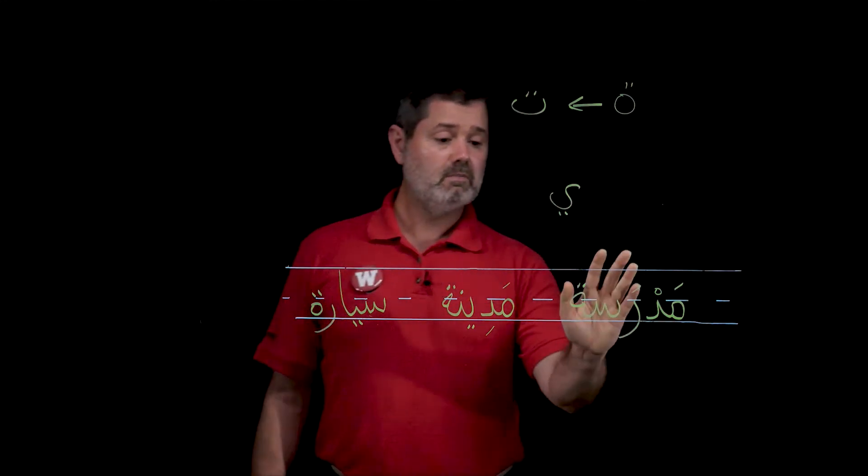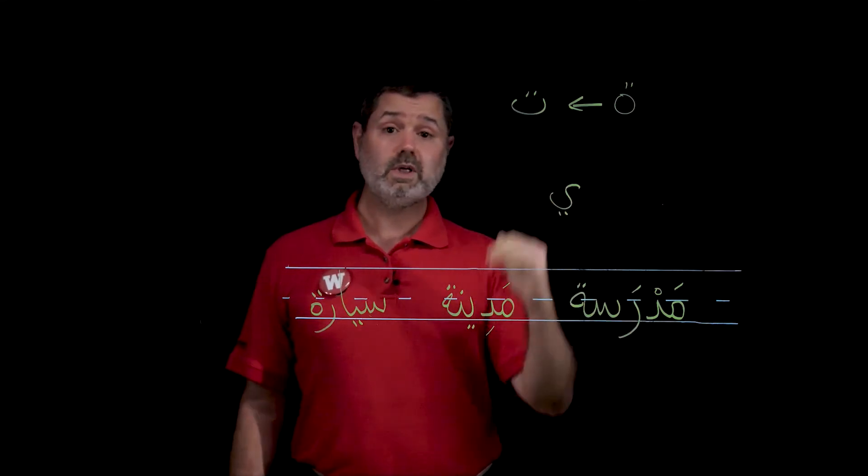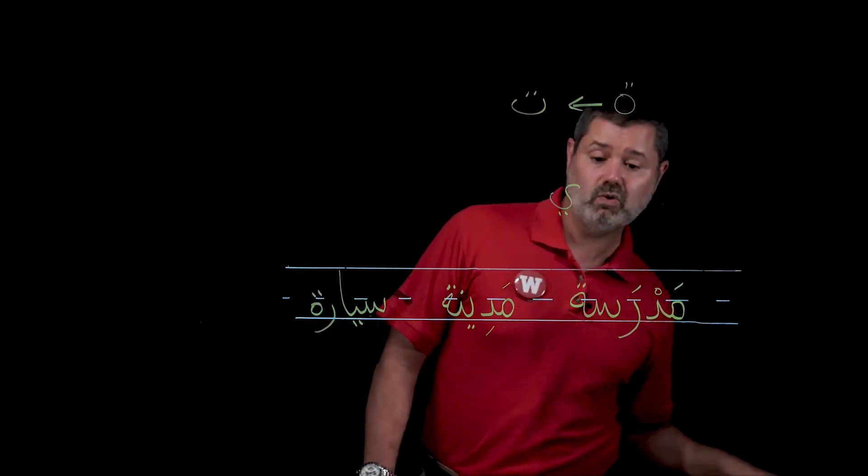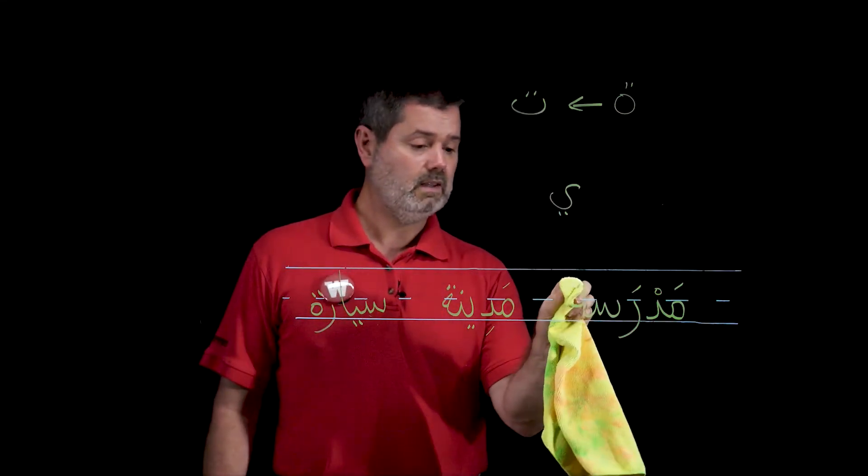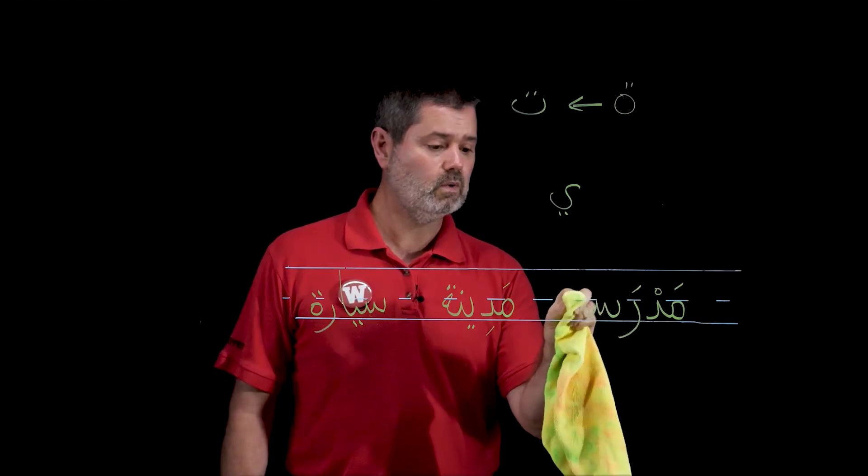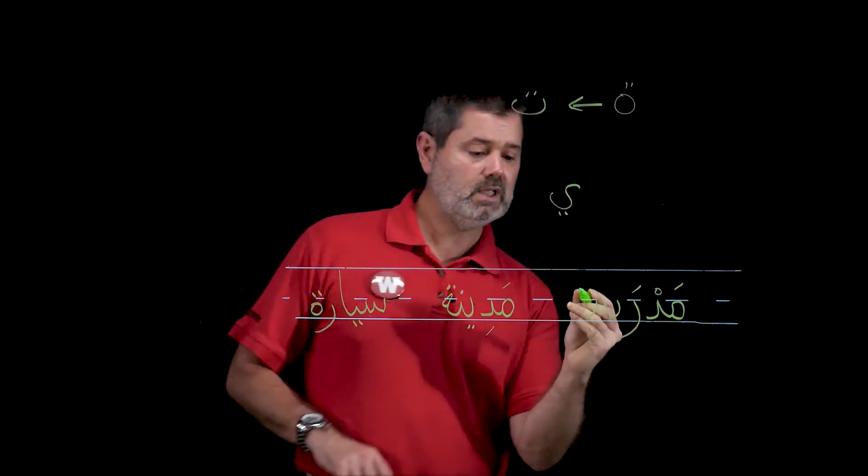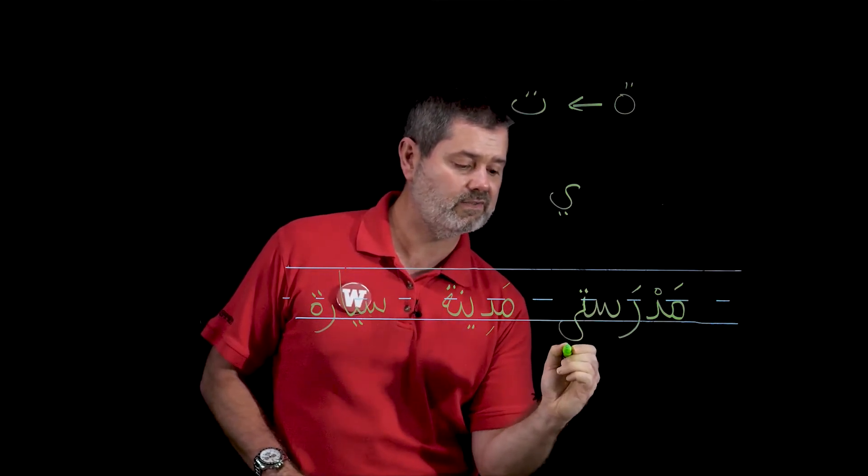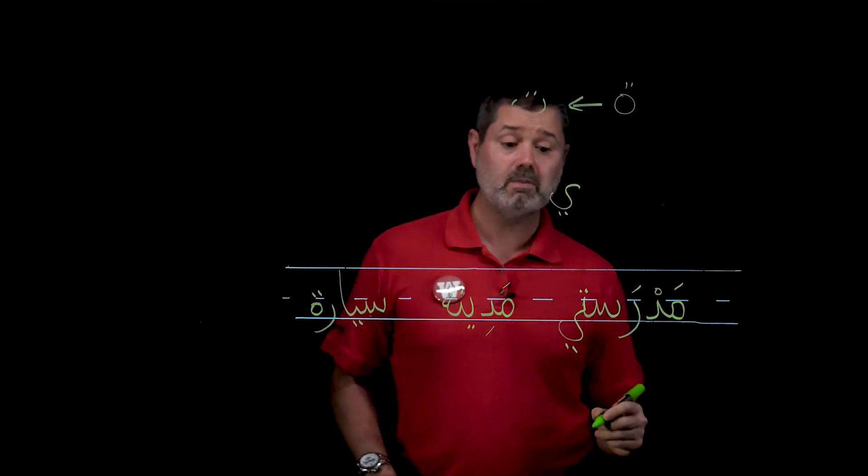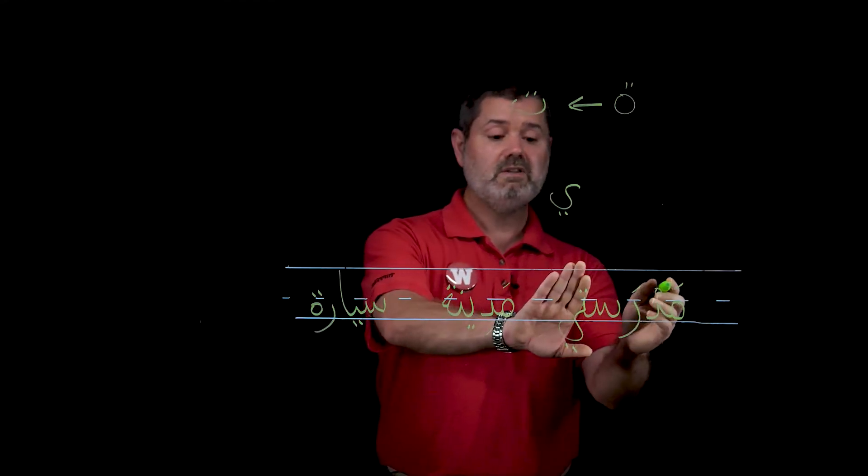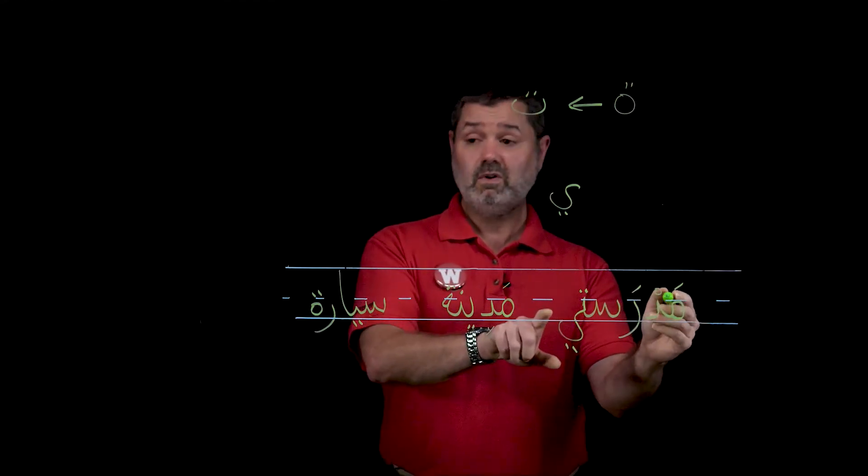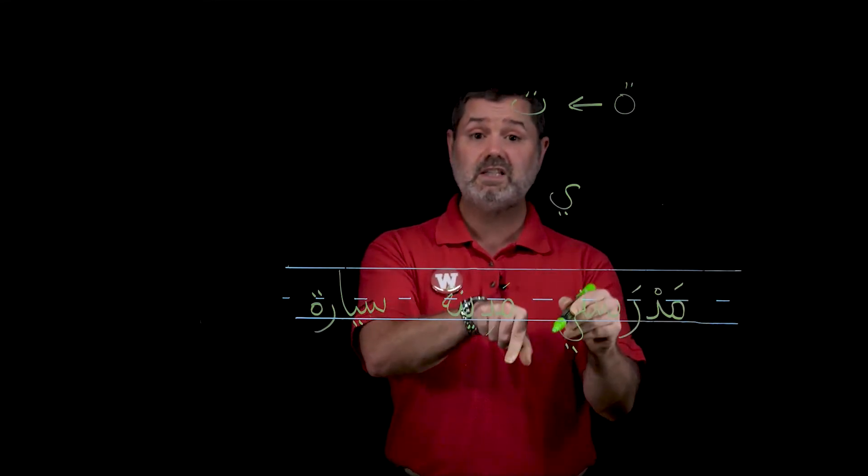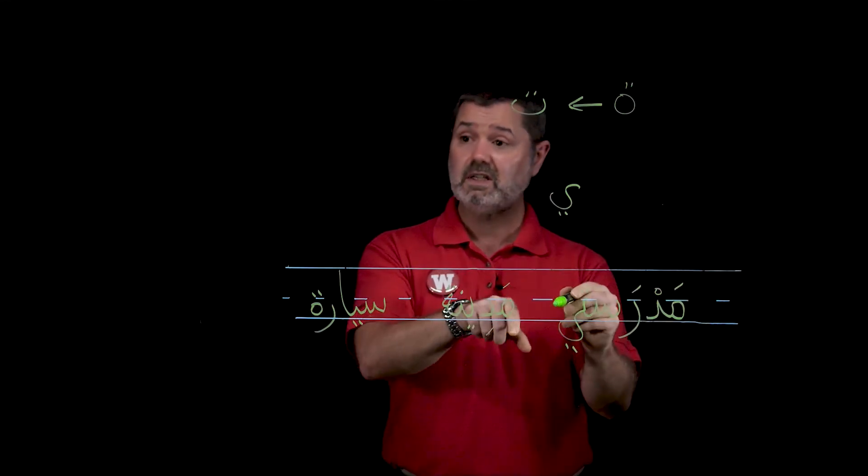Let's take a look at these examples. I have here madrasa, school. I told you we can put an e on it to make it my. So what if I want to say my school? Well, this tamabuta is going to go away, transform into a ta in all senses. It's a real live ta and I'm going to pronounce it. I had madrasa. Now you don't say madrasa e. No, because this is now a ta. Madrasa-te. It's pronounced.